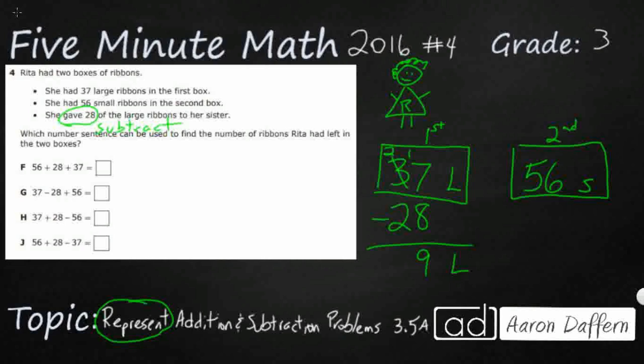So we need to find the number of ribbons that she had left in the two boxes. Well, she did have 37. She took away 28 to give to her sister. She's only got 9 left. So it looks like she's got the 9 plus this 56. And so if you did want to add 9 and 56, you could do that. So that's going to be 15, 65 ribbons. 9 large, 56 small. Once again, we don't have 65, but we do have a few different options of finding 65.